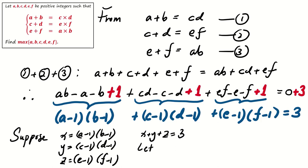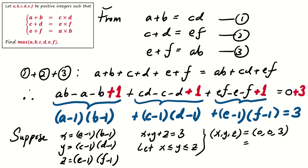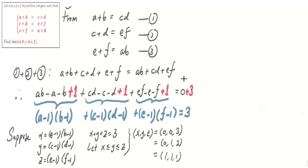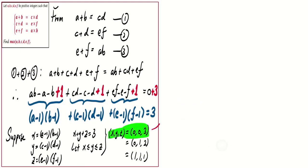Without loss of generality, we let x less than or equal to y less than or equal to z. Then x, y, z is either 0, 0, 3 or 0, 1, 2 or 1, 1, 1.